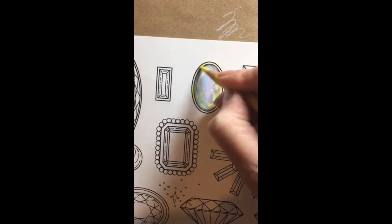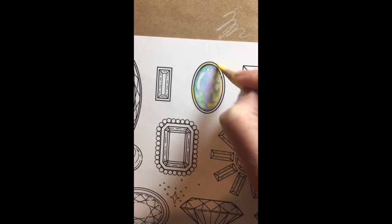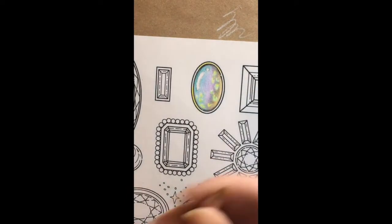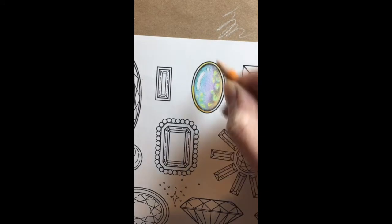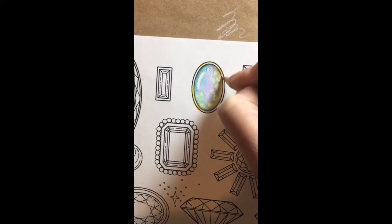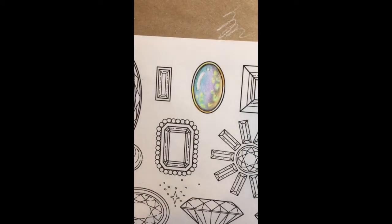I'm going to add a simple gold bezel to my stone just to make it look a little bit more finished and realistic. You can see that my light source again is coming from the upper left so I'm going to leave that area the lightest and then towards the lower right is going to be my darkest.